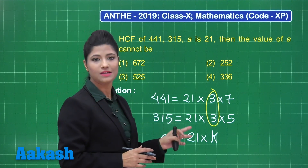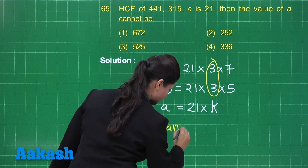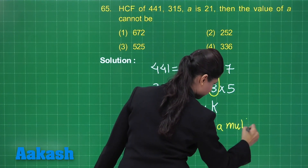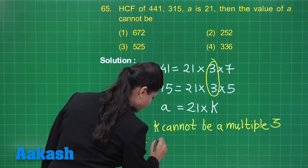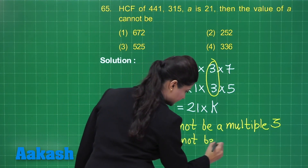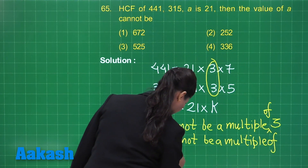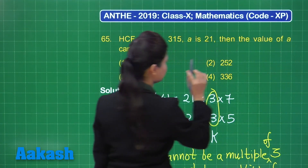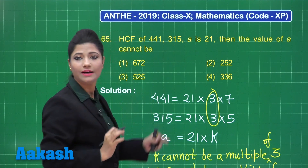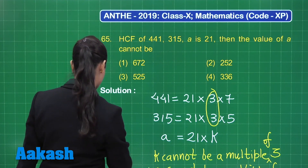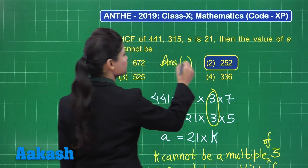We can observe that 3 is already a common factor present in both 441 and 315. If k were also a multiple of 3, the HCF would become 63 instead of 21, contradicting the given condition. So k must not be a multiple of 3, meaning 'a' cannot be a multiple of 63. Checking the options, 252 = 63 × 4, so the value of 'a' cannot be 252 — answer is option 2.